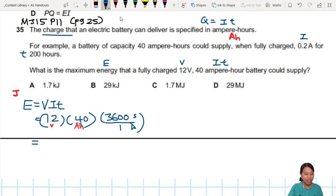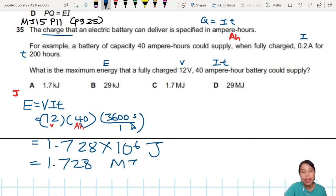So 1.728 times 10 to the 6 is what I get for this in joules. They took away the prefix, so 1.728 times 10 to the 6 - close to mega joules. So that will be C in this case.